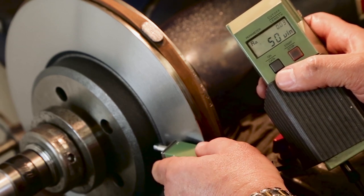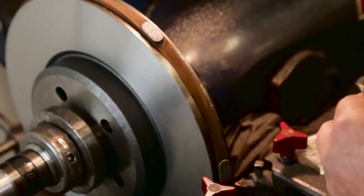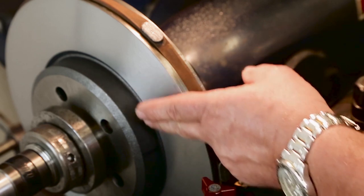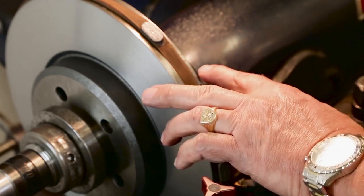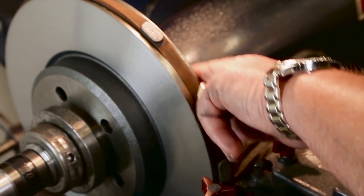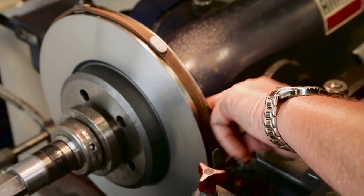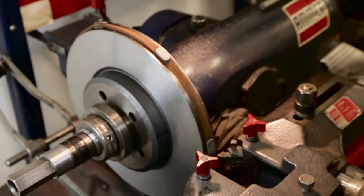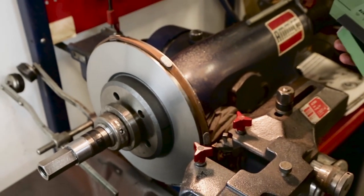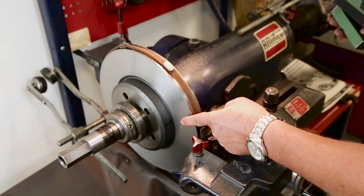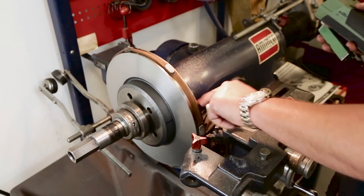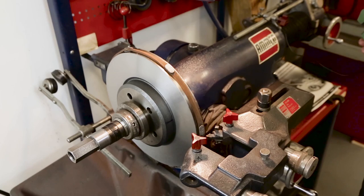Also we have not done our non-directional finish. Something that would help both of these surface finishes to become smoother. Obviously the non-directional finish is something that needs to be done before we would actually want to measure the surface. But just for our comparisons, we wanted to do it before we put our non-directional finish together.